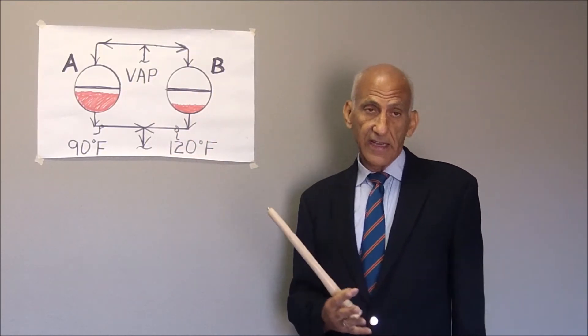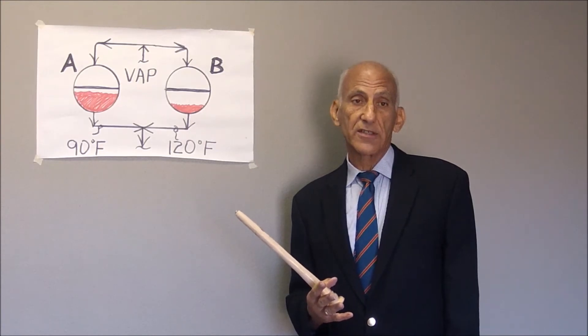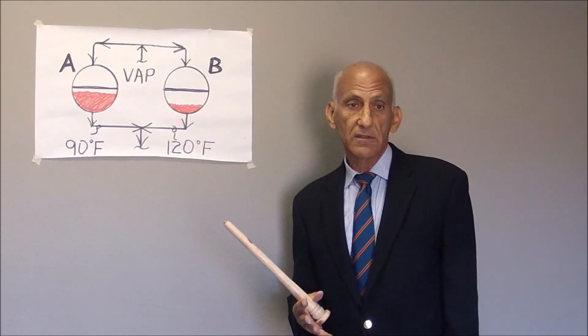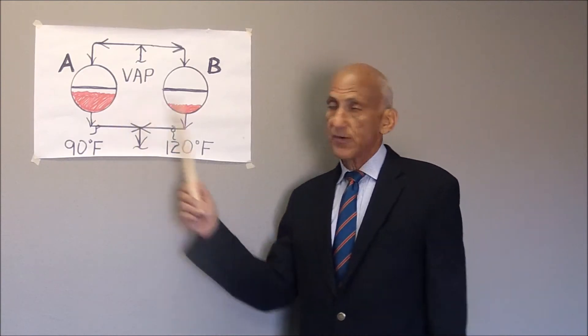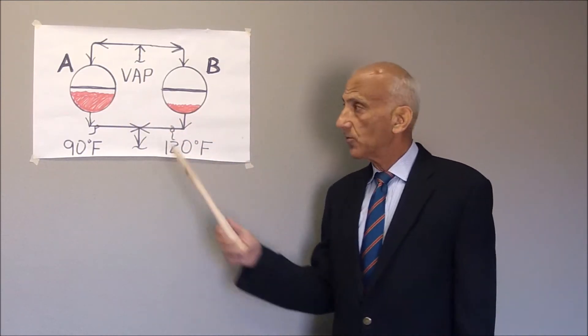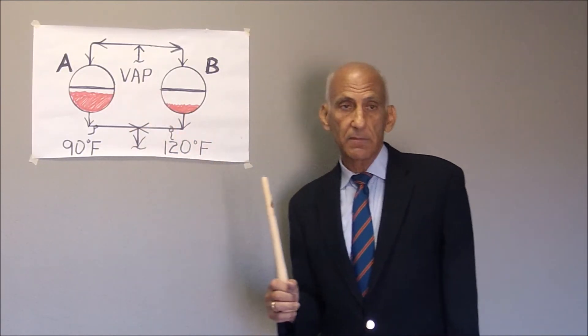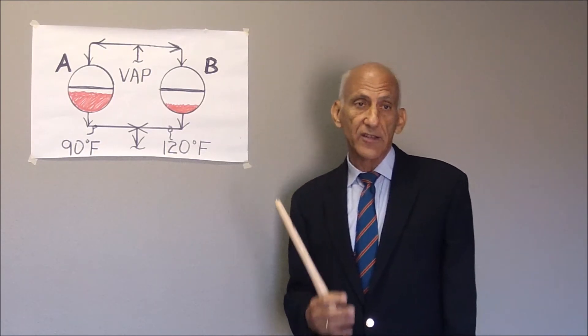On the other hand, condenser A, which is handling less than half the load, will have a low condenser outlet temperature. Because as the liquid backs up on the channel head side and the tube side of A,